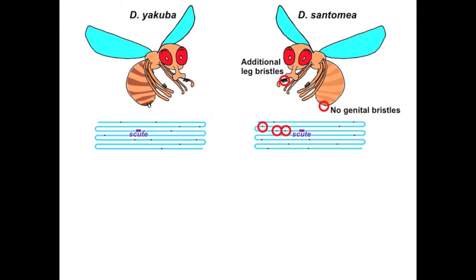In Drosophila yakuba, the SCUT gene is highly expressed in the developing genitals, so that two bristles are formed, and also in the developing forelegs, so that eight or nine bristles are produced.